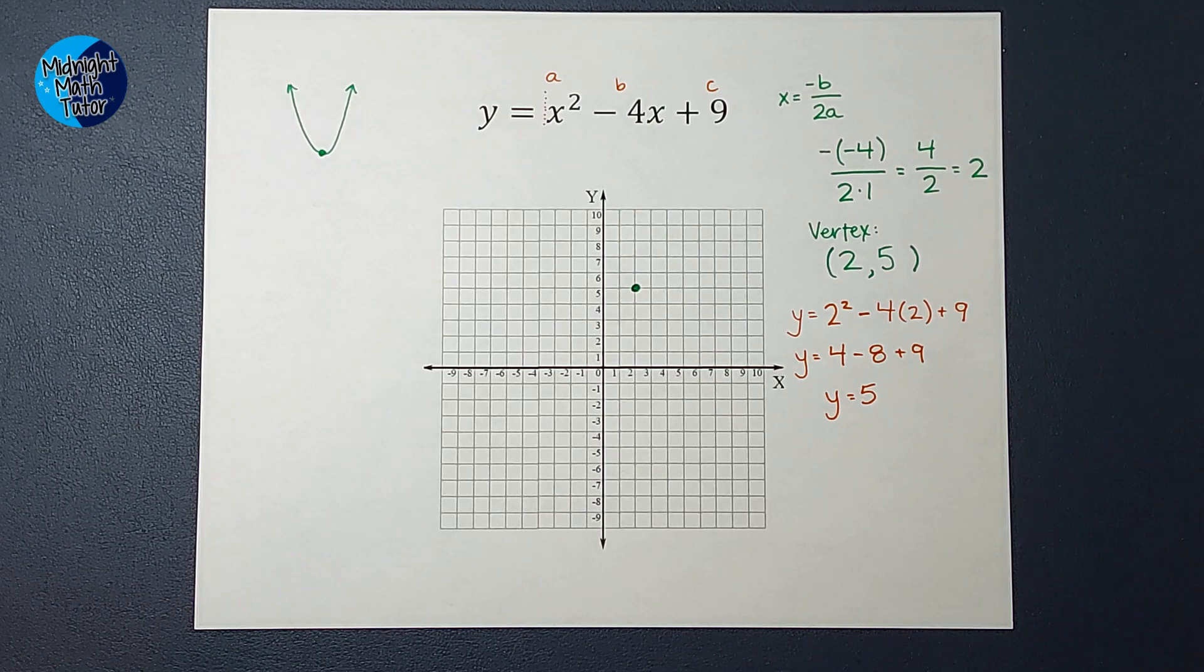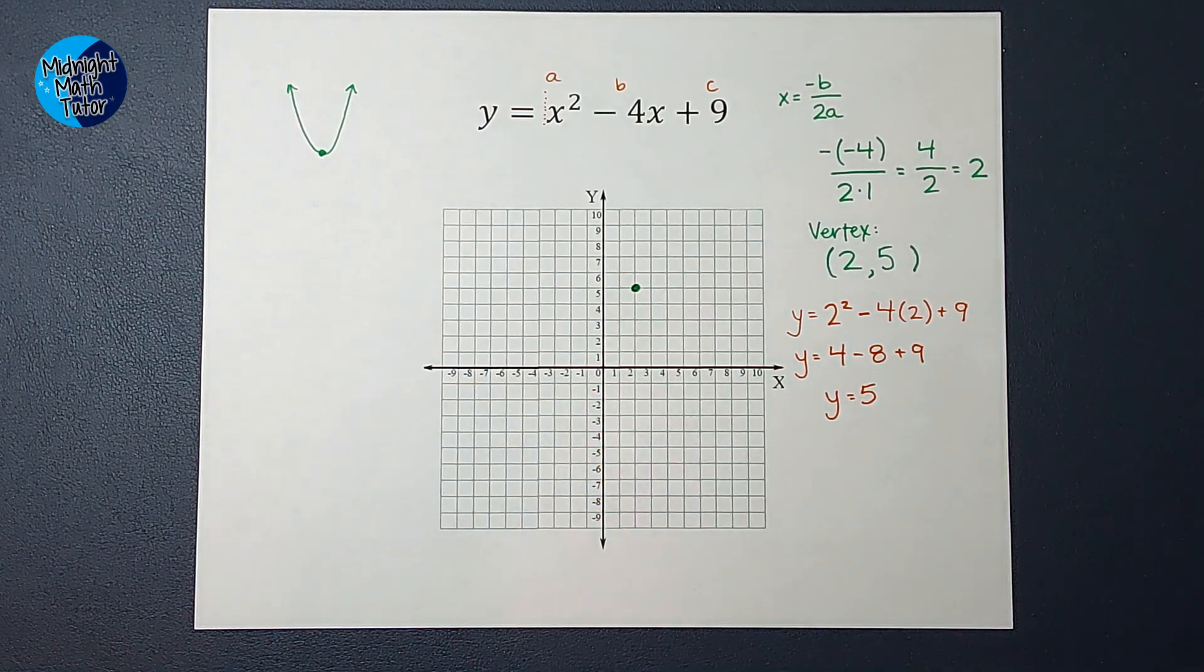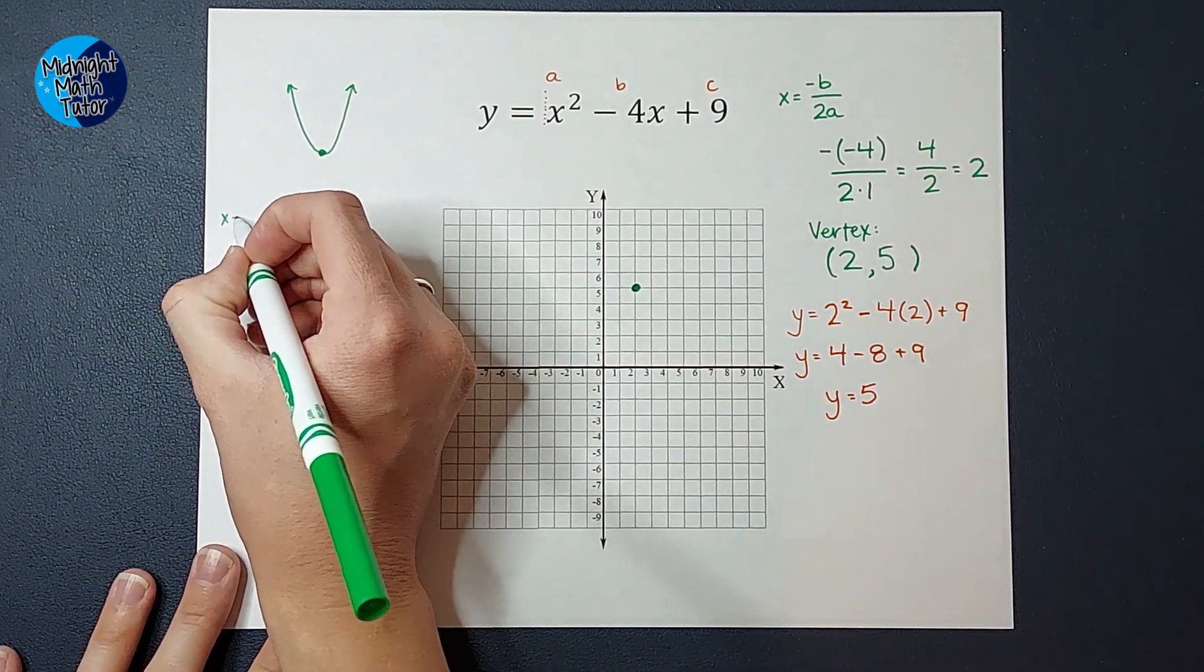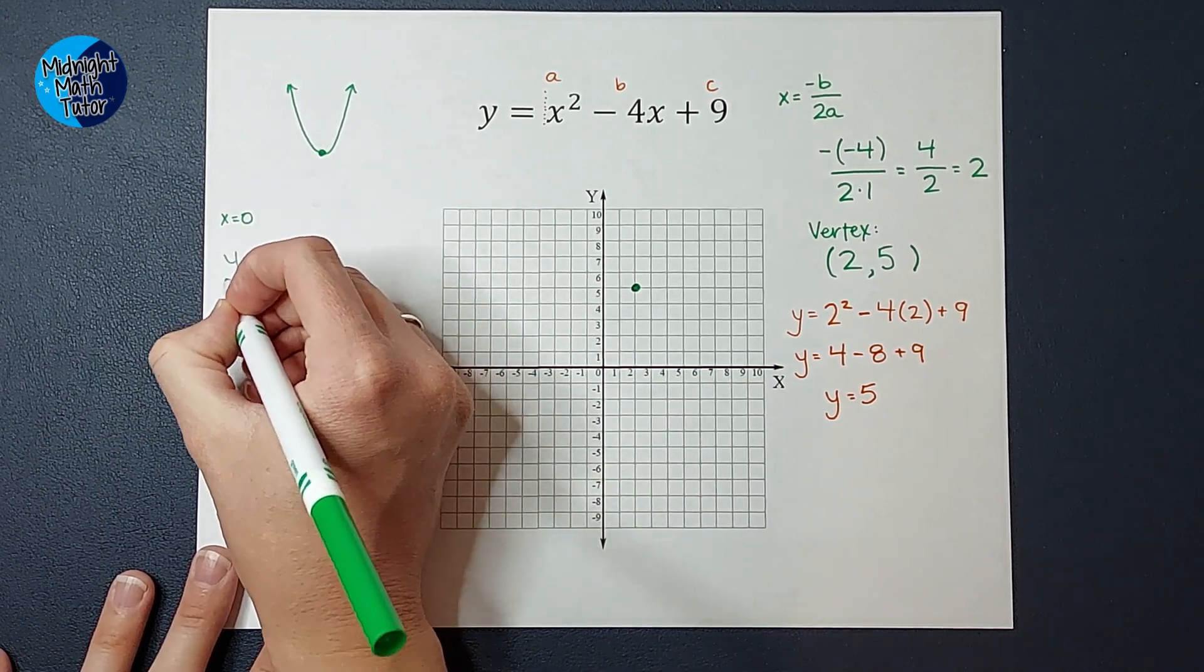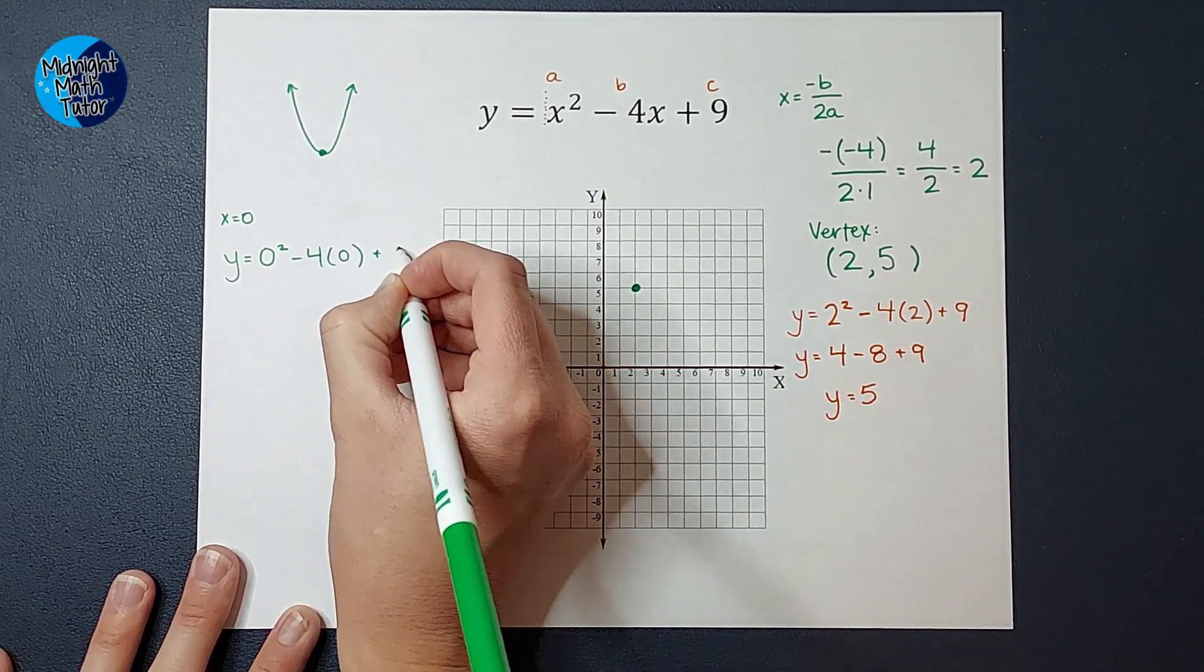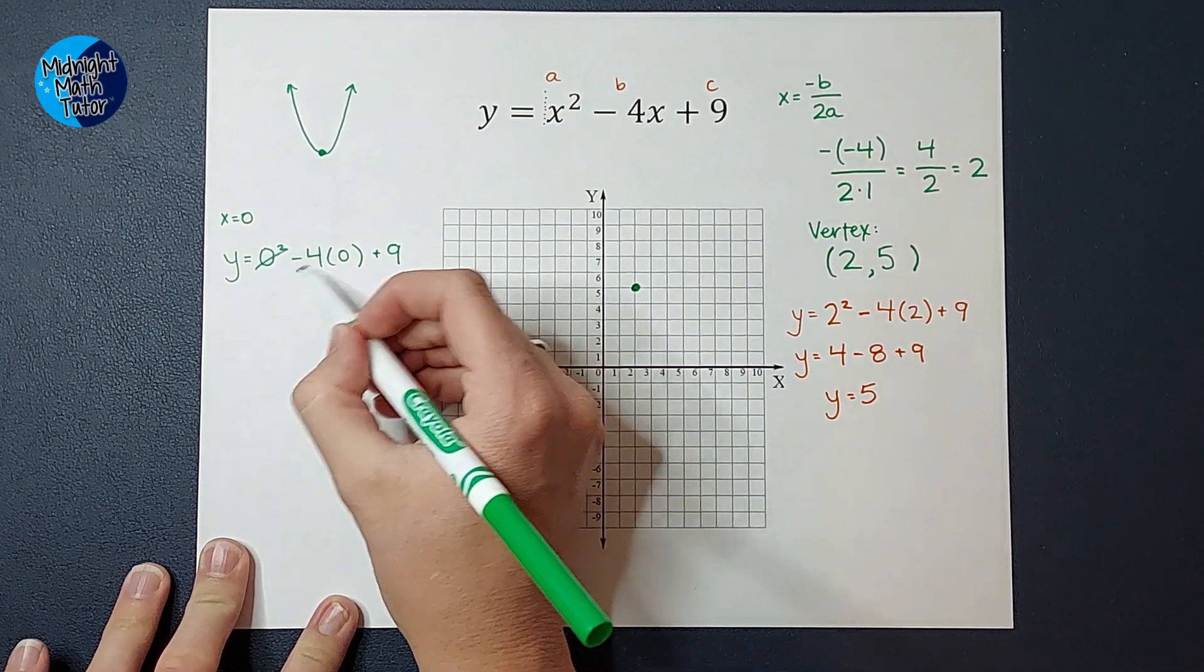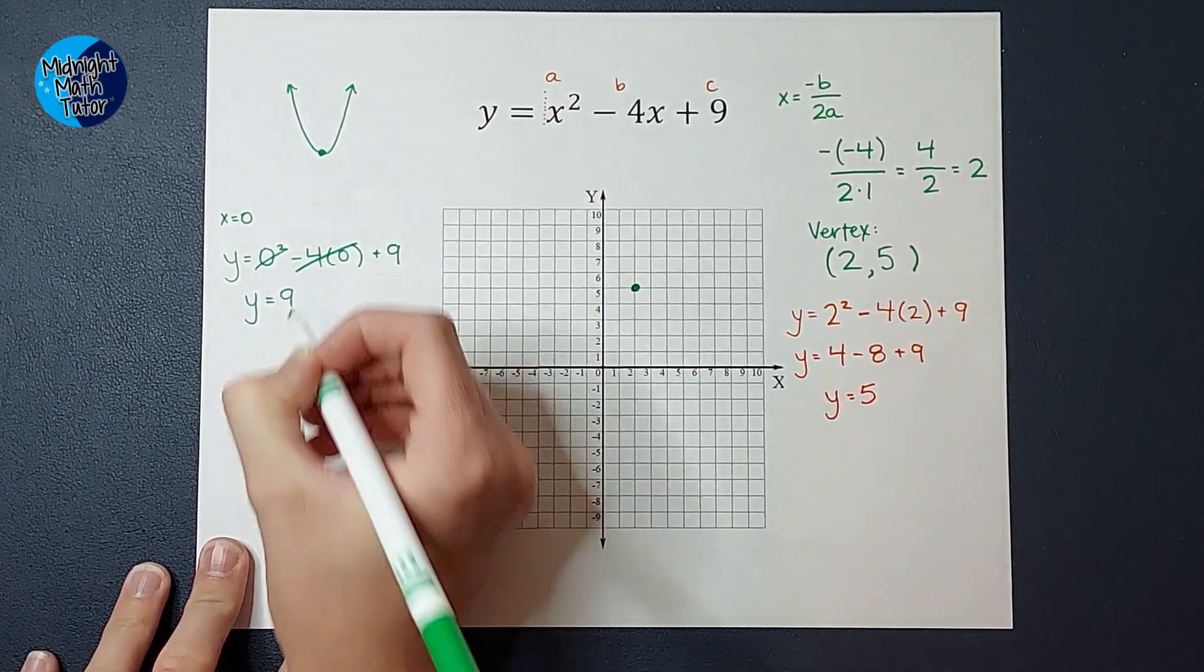So let's go ahead and plug in, let's plug in 0, just because we like 0s, right? So we're going to plug in 0 for x. So I'm going to have y equals 0 squared minus 4 times 0 plus 9. Now, you probably could have done this in your head, because these go away. Those all end up being 0s, and I end up with y equals 9.